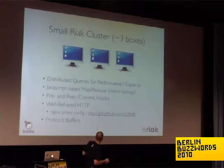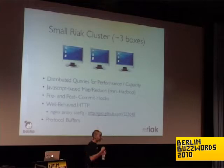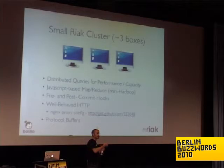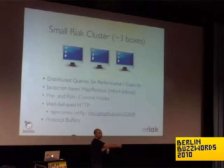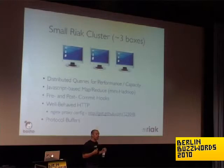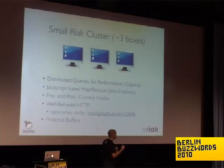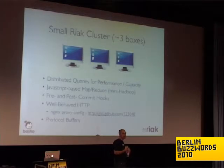At the three-node level you get JavaScript-based MapReduce. You can take a set of starting keys along with some JavaScript Map and Reduce functions, and run a MapReduce operation in real time. The map operations respect data locality, so they run on the nodes where your data lives. It calculates the value and returns it in real time — sort of like a mini-Hadoop, but instead of a batch job, you get results back at web speed.